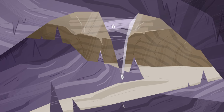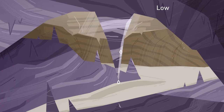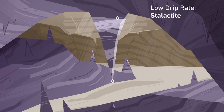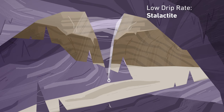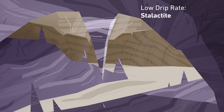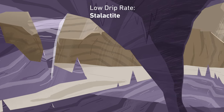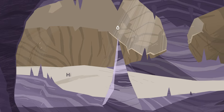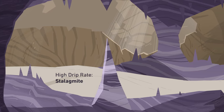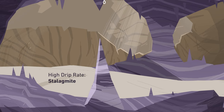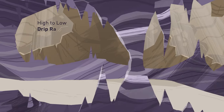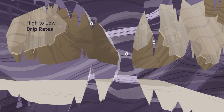It depends on the drip rate. The drop can either hang for a long time at the ceiling, and all the CaCO3 precipitates up there — this then produces a stalactite. Or, the drops fall down quickly, and the CaCO3 precipitates there, forming, over thousands of years, a stalagmite. Of course, any combination in between is also possible.